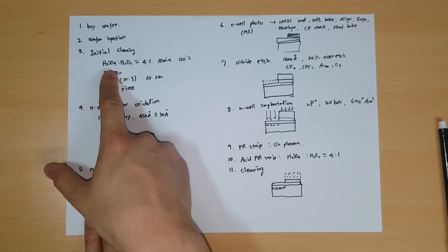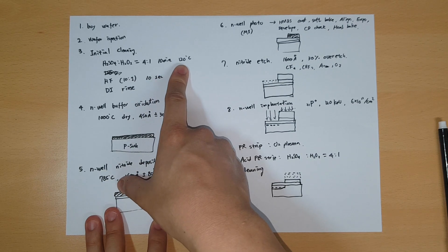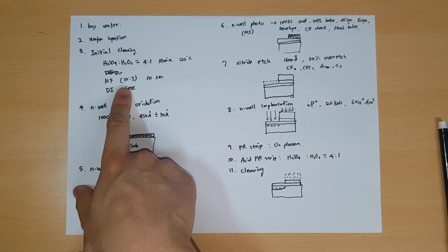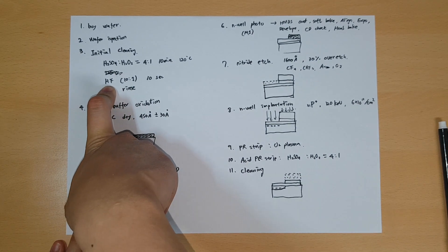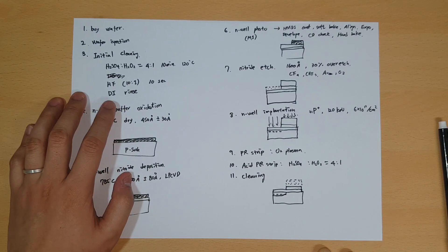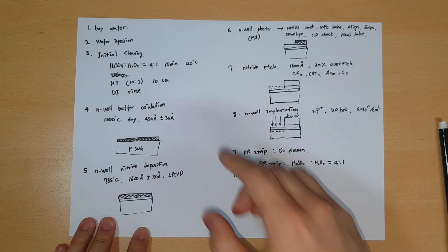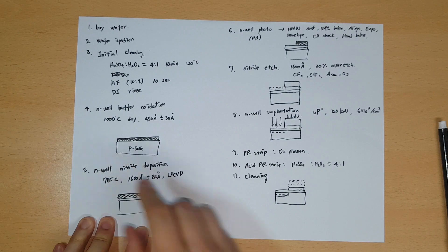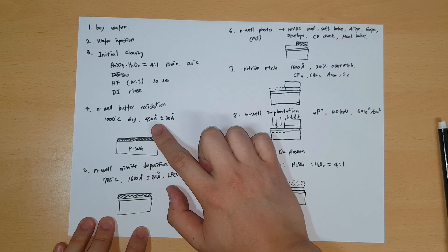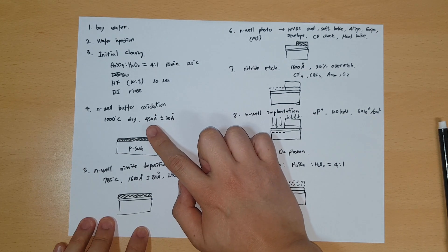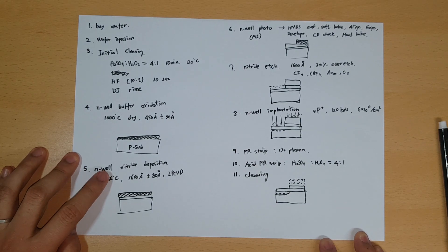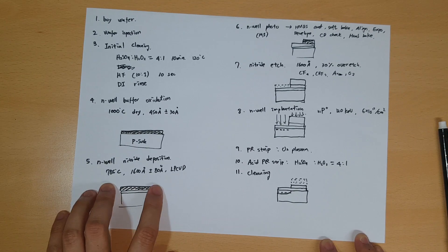After inspection, step three is the initial cleaning. You use H2SO4 plus H2O2 at a 4-to-1 ratio, about 10 minutes at 120 degrees Celsius — this removes polymer materials. Next you use HF solution, which removes the native oxide that forms when you expose the wafer to air. After that you rinse the wafer with DI water. Step four is the N-well buffer oxidation: you grow a silicon oxide layer of about 450 angstroms in dry conditions at 1000 degrees Celsius.